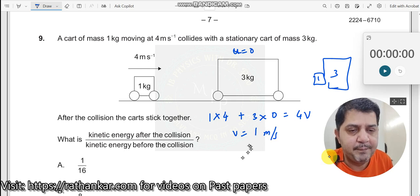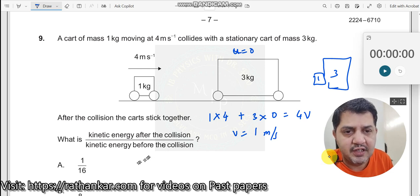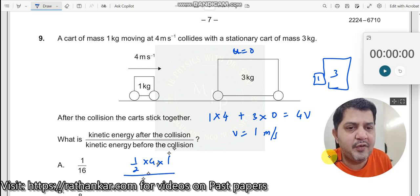Now calculate the kinetic energy after the collision. KE after equals 1/2 × 4 × 1², divided by kinetic energy before collision, which is 1/2 × 1 × 4² = 16, plus 1/2 × 3 × 0².